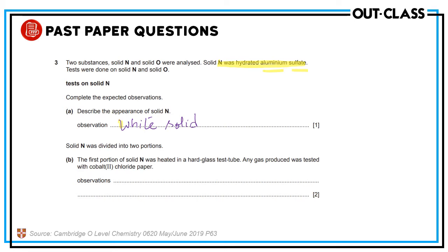You always dissolve the salt in water. If it's a non-transition metal salt, it would form a colorless solution. The first portion of solid N was heated in a glass tube; any gas produced was tested with cobalt chloride paper. Cobalt chloride paper is the test for water. Since it's hydrated aluminum sulfate, when heated it will produce water vapors, which will change the color of cobalt chloride paper from blue to pink.